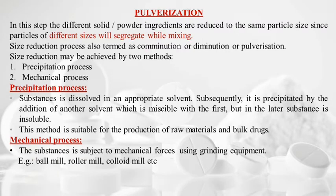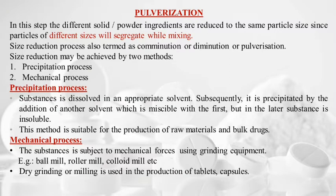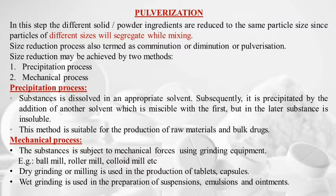In the mechanical process, the substance is subjected to mechanical force using grinding equipment such as ball mill or roller mill. Dry grinding or milling is used in production of tablets and capsules, while wet grinding is used in preparation of suspensions, emulsions, and ointments.